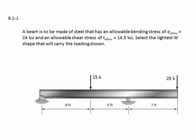Problem 9.1-1. A beam is to be made of steel that has an allowable bending stress of sigma allowable equal to 24 ksi and an allowable shear stress of tau allowable equal to 14.5 ksi. Select the lightest W shape that will carry the loading shown. Here's a beam with dimensions. It's pin supported at this end, a roller here in the middle with a cantilever end, and two point loads. Let's do this problem.